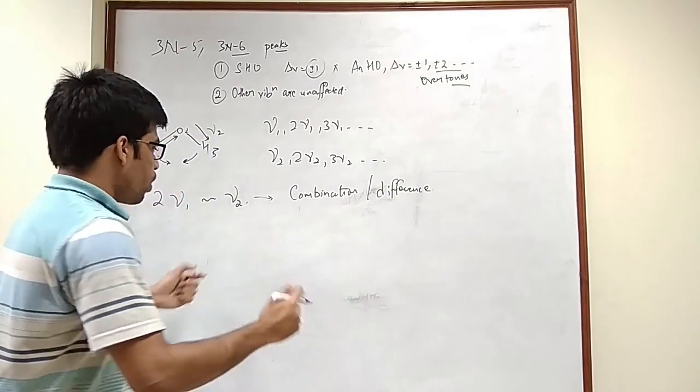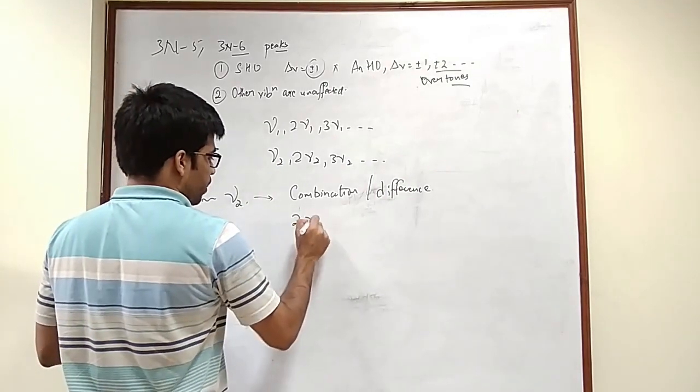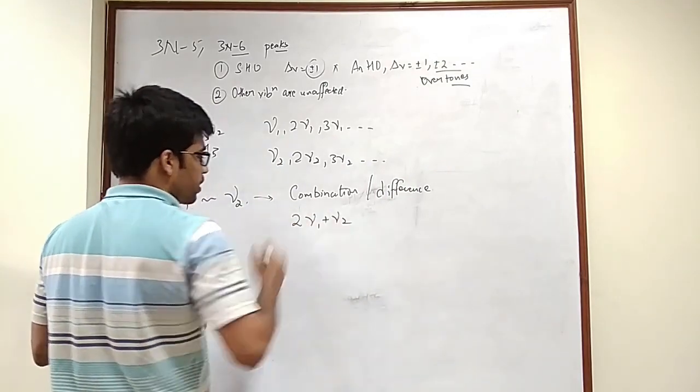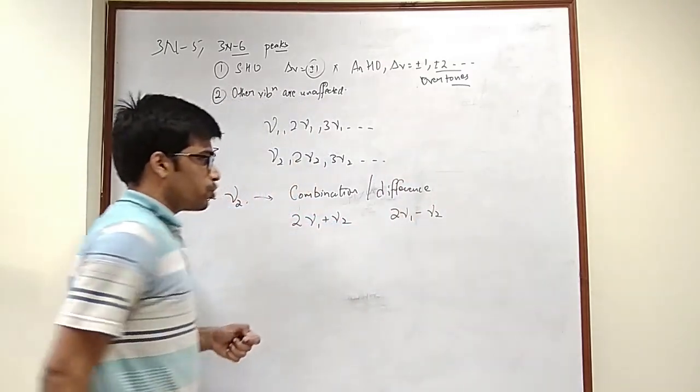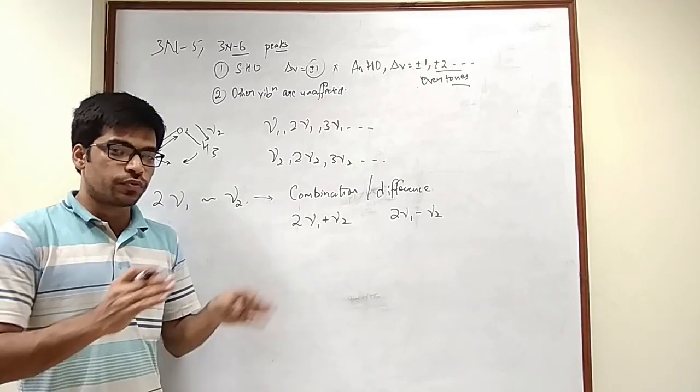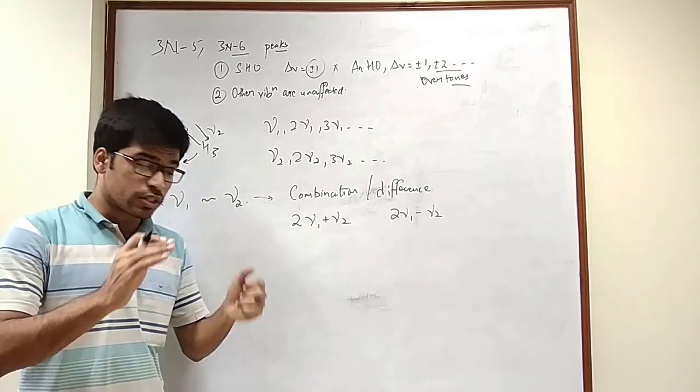Combination band would mean I would get a peak at this position and difference band would mean I would get a peak at this position. These are all according to the allowed selection rules for these type of interactions.